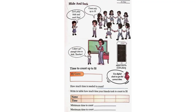Hide and seek. Let's play hide and seek, Neil. Count only up to 50. I didn't get enough time to hide, teacher. Time to count up to 50 — my guess: 30 seconds. Use a digital clock to get the correct time. How much time is needed to count? 50 seconds.